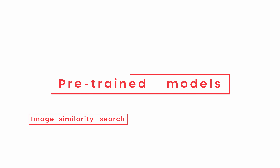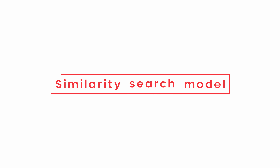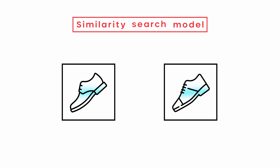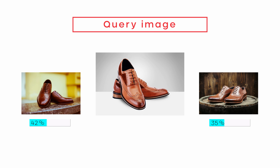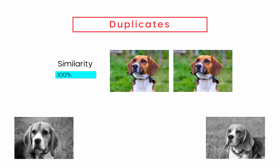Some of our models, like image similarity search and pre-trained models, do not need labeling or training steps and can be used to make predictions directly. The similarity search model can help to find similar images in your dataset, find out whether your dataset contains images similar to a query image, find duplicates, and aid image labeling.